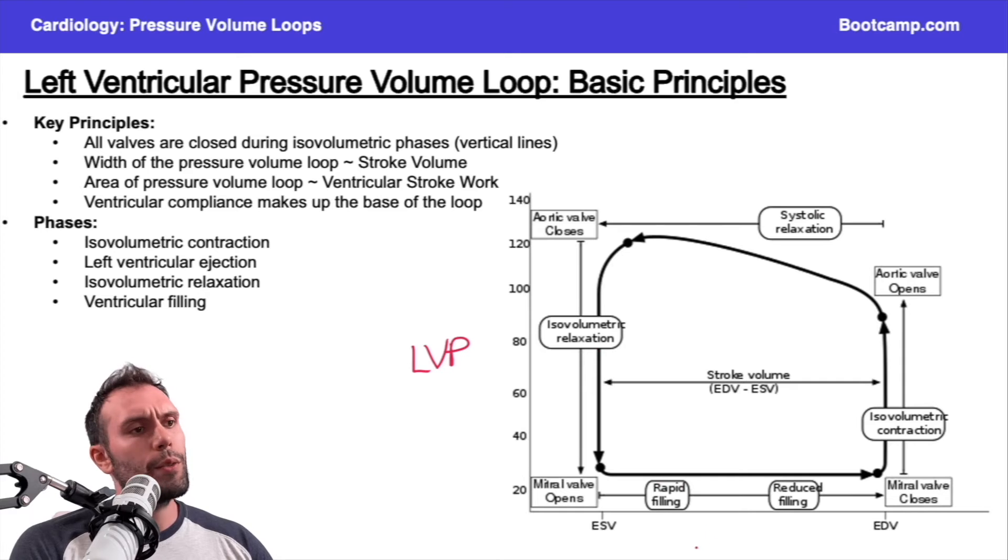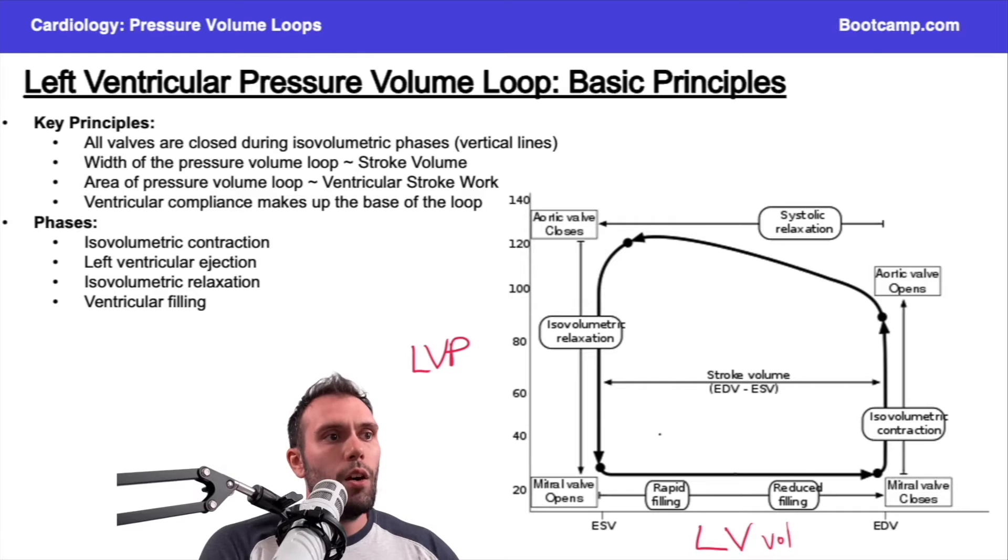Very rarely will you see any other chamber tested. It's usually almost always going to be the left ventricle. So left ventricular pressure, and then we have our left ventricular volume here on the x-axis. Let's just start at this point right here.